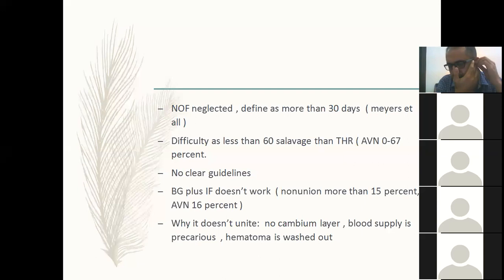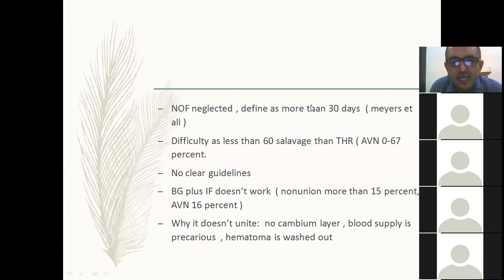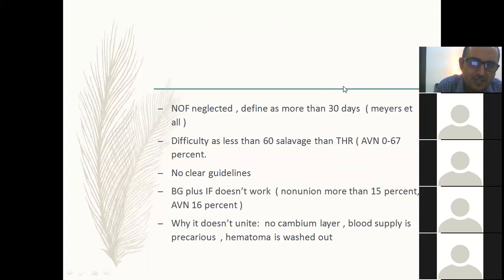He asked why it does not unite. The answer: there is no cambium layer of periosteum inside the joint; the blood supply of the femoral head is precarious; and the hematoma is washed out because of the synovium — the synoviocytes absorb all the blood. It's not like a fibula fracture where a hematoma transforms into callus with osteoprogenitor cells. Everything is washed out because of the synovial blood.